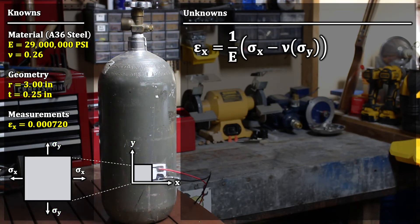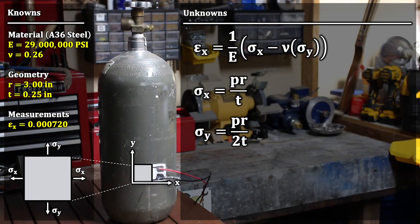Now for a thin-walled pressure vessel, the normal stress in the hoop direction, what we're calling x, is pr over t. And the normal stress in the y-direction, what we call the longitudinal stress, is pr over 2t. Now these are the type of equations that would be given to you in the reference material for the PE exam, or you could look them up in a mechanics book for work, but they're derived just based on geometry and load.